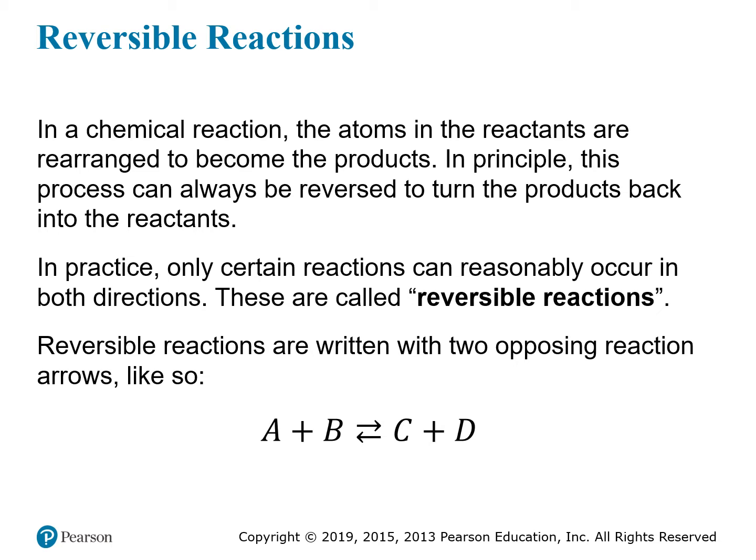Before we get to that, we want to understand first what a reversible reaction is, because chemical equilibrium depends on the existence of a reversible chemical reaction. A chemical reaction is just a rearrangement of atoms. You have a collection of atoms in the form of reactants with certain bonds and a certain configuration. During the course of a reaction, those bonds are broken, new bonds are formed, and the atoms rearrange into a new arrangement — and that's the products.